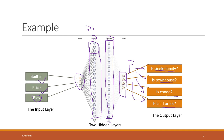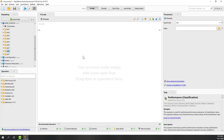Some parameters you can change include the number of layers and within each layer the number of units or neurons. There are also other types of parameters you can select for the neural network. Let's see a quick demo in RapidMiner.